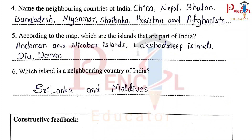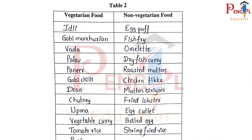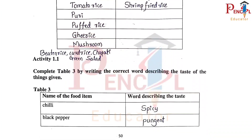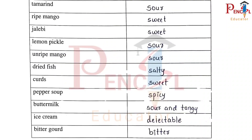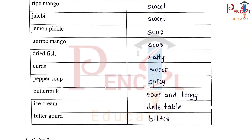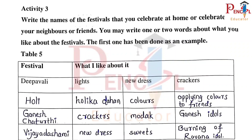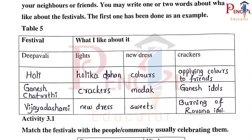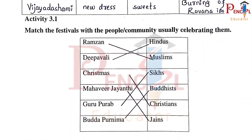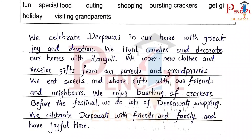Vegetarian Food and Non-Vegetarian Food. Activity 1.1 — Food Items and Their Taste. Activity 2 — Festival, What I Like About It, Festivals with People Celebrating Them, One Festival Celebrated in Our Home.